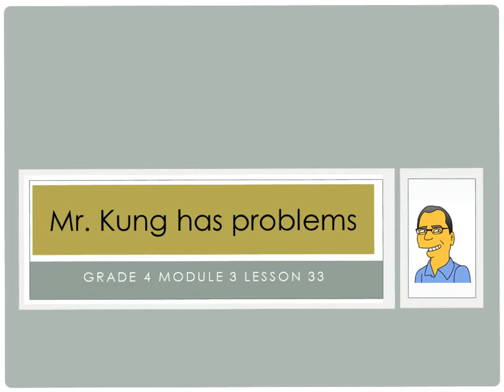Hello and welcome to another episode of Mr. Kung Has Problems. Tonight we're working on Grade 4, Module 3, Lesson 33. And this time we're looking at the connection between area models for division and the long division algorithm. And we're doing that for dividends that are either three or four digits long.